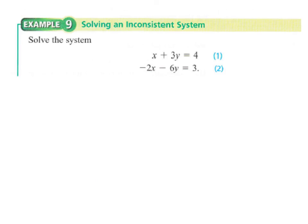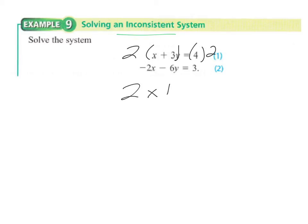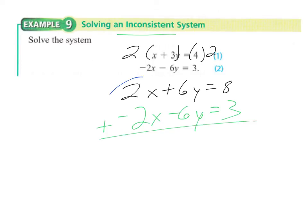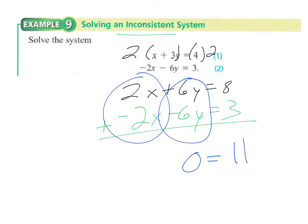Here's another system that is inconsistent. Multiplying the top equation by 2 gives 2x plus 6y equals 8. Adding that to negative 2x minus 6y equals 3, the x's cancel and the y's cancel, leaving 0 on the left and 8 plus 3 equals 11 on the right. This is a false statement, meaning there is no solution — represented by the symbol for the empty set. Hopefully you found going through these slides helpful, and feel free to pause and rewind as much as you need to. Thanks for watching.